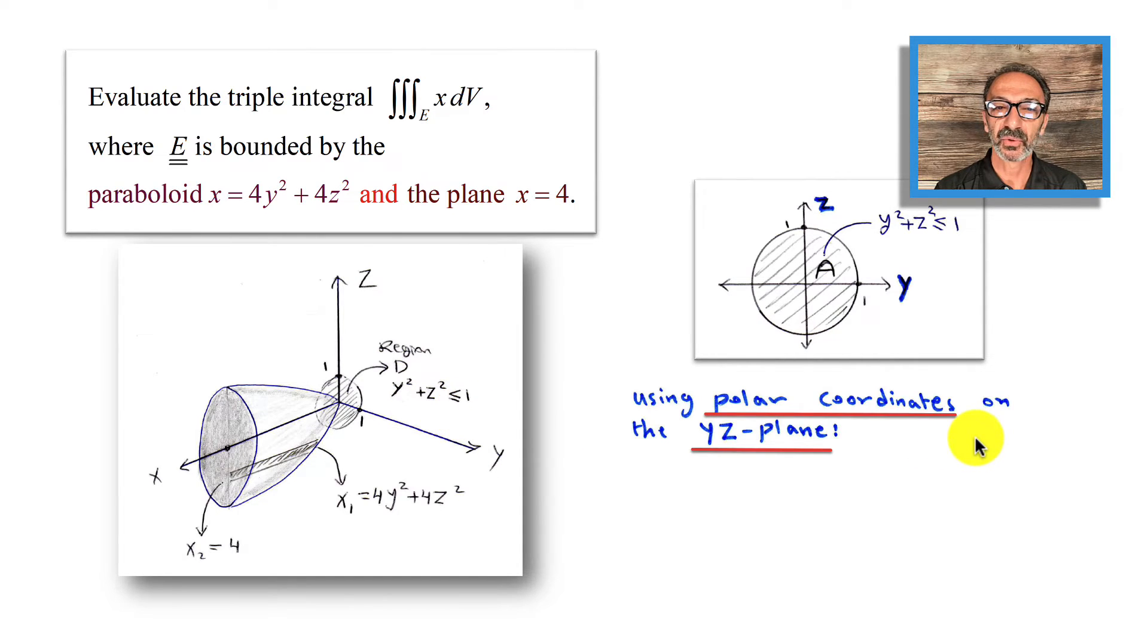Using polar coordinates on the y-z plane, this is a circle or a disk. We can take advantage of polar coordinates. Usually it's x and y, but this time y will be r cosine theta and z will be r sine theta.